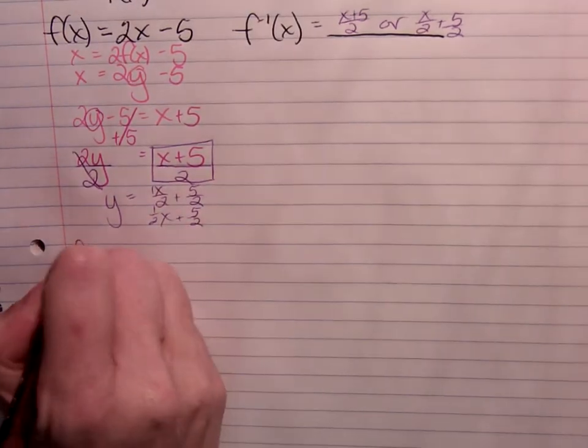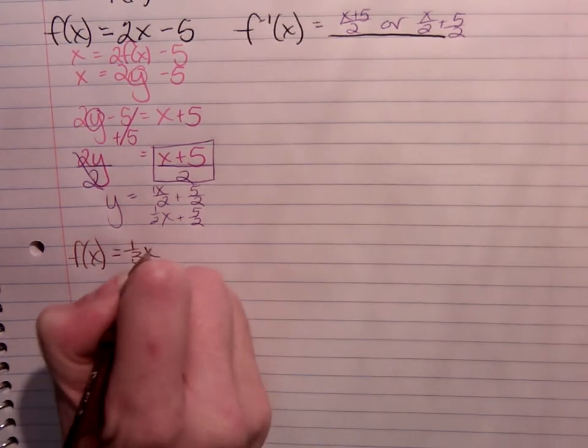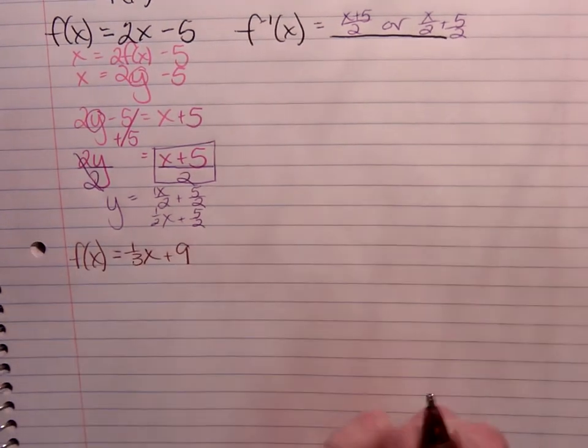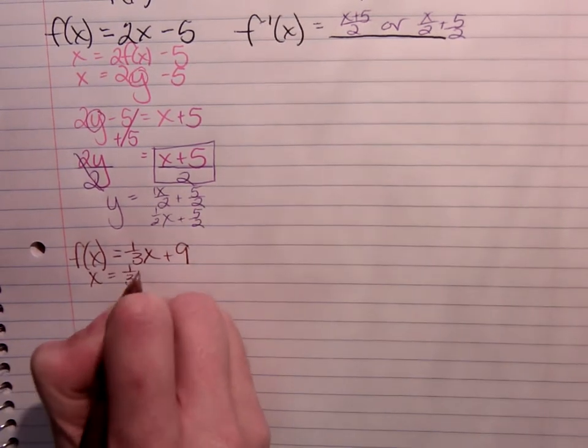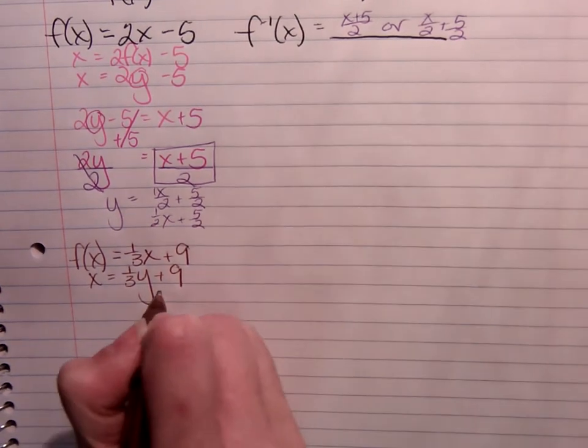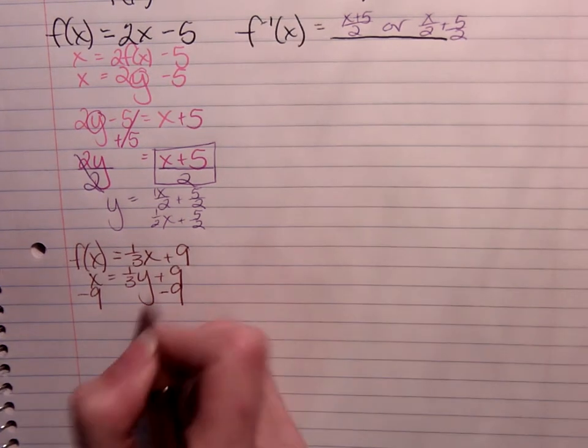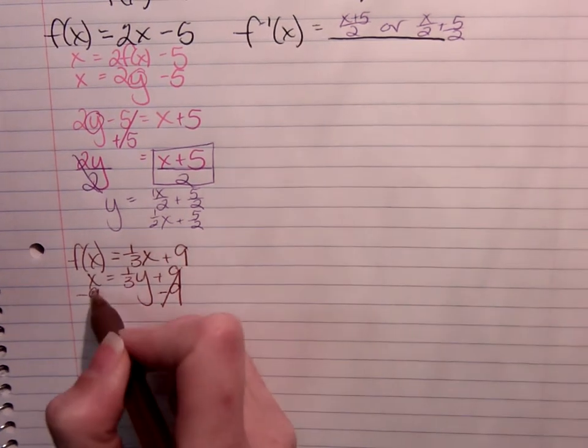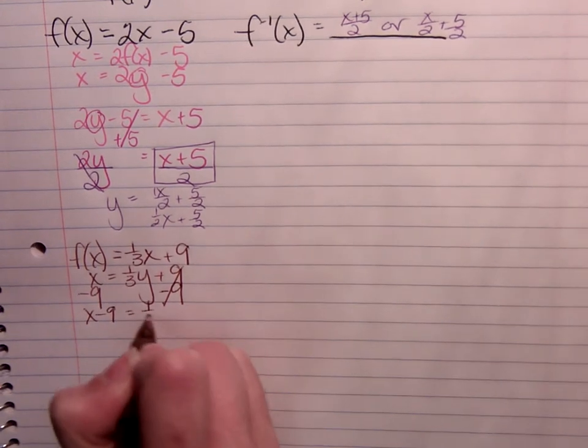What about f of x equals 1 third x plus 9? When I rewrite that, x equals 1 third y plus 9. I'm going to leave this one as it is. And just go straight to isolating y. Subtract 9. These are not like terms, so I just write down x minus 9 equals 1 third y.